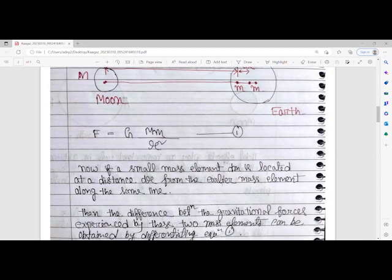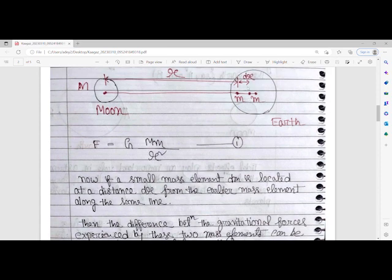Now if a small mass element dm is located at a distance dr from the earlier mass element along the same line, there's another mass element dm located at a distance dr from the earlier mass element.